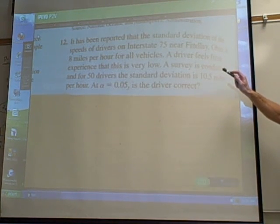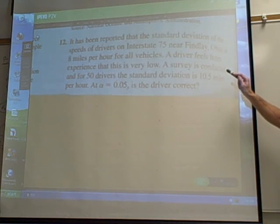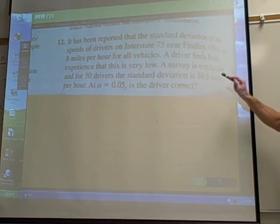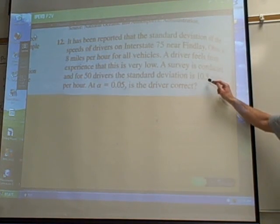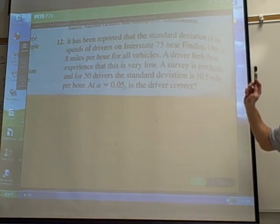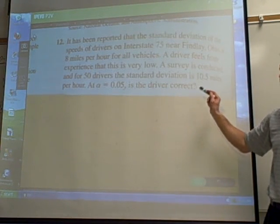A driver feels from experience this is very low. A survey is conducted and for 50 drivers the standard deviation is 10.5 miles per hour. At alpha equal 0.05, is the driver correct?